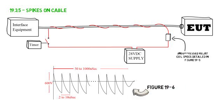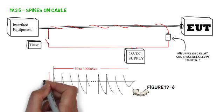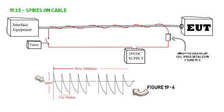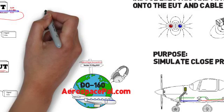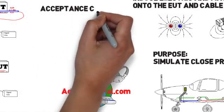The waveforms achieved will not be perfect. In figure 19-6, the note recognizes that some spikes will be less than 600 volts peak-to-peak. Aim for at least 75% of the spikes being above 600 volts peak-to-peak.